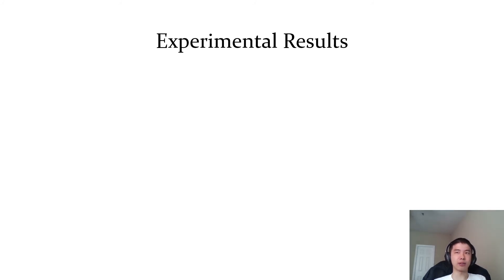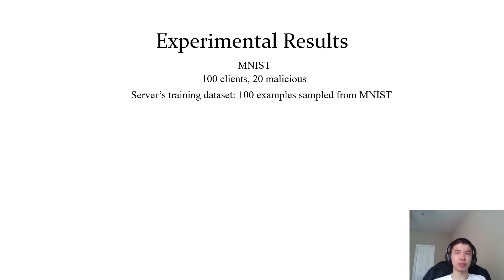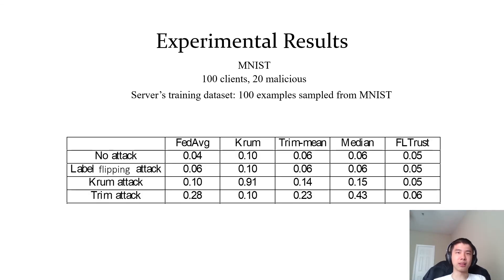Empirically, we evaluated our method on multiple datasets, and we will show results on MNIST as an example — other results can be found in our paper. We assume there are 100 clients and 20 of them are malicious. The server's training dataset includes 100 training examples sampled from MNIST uniformly at random.